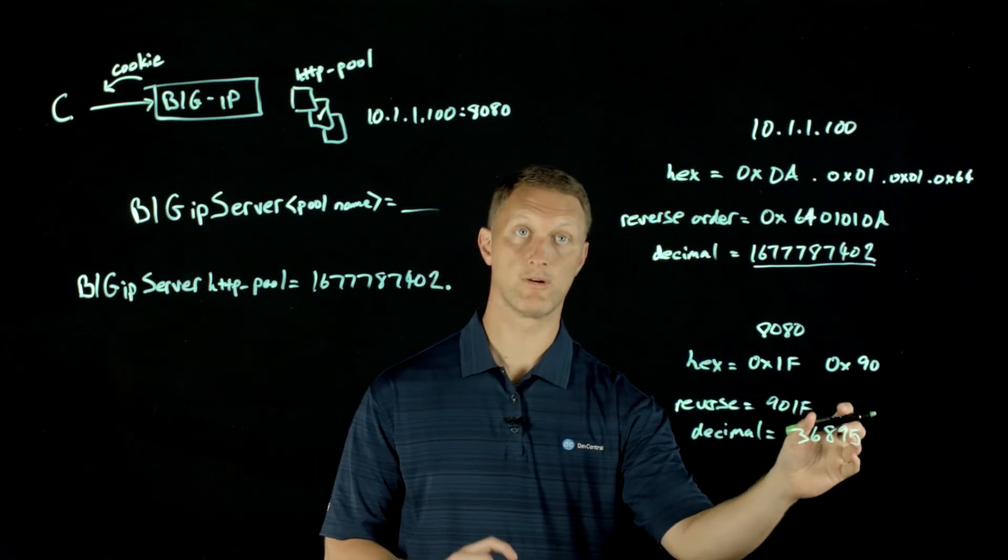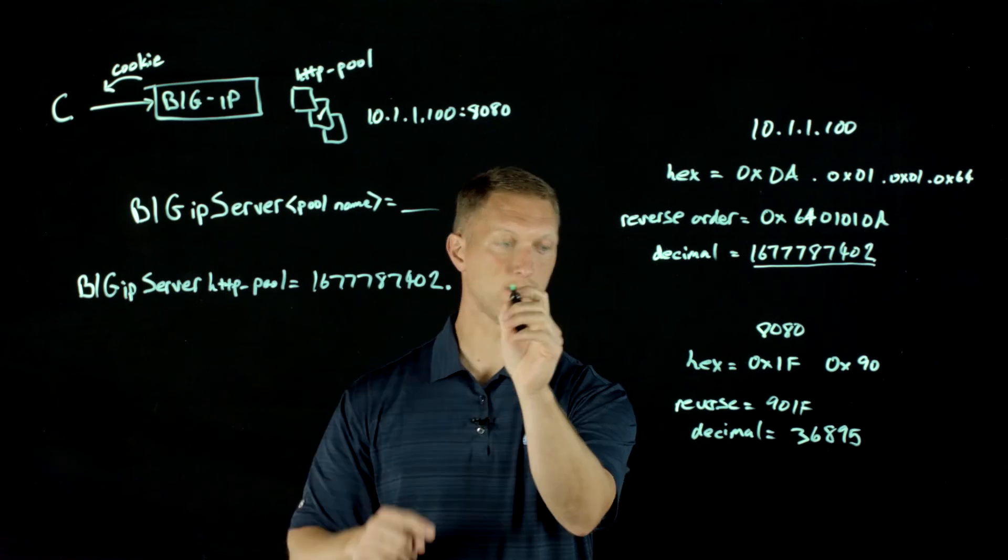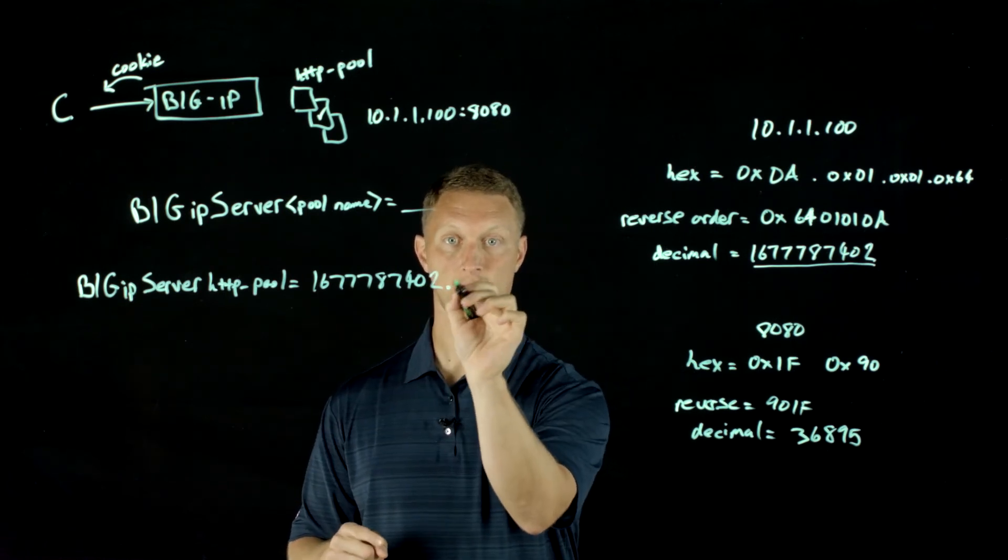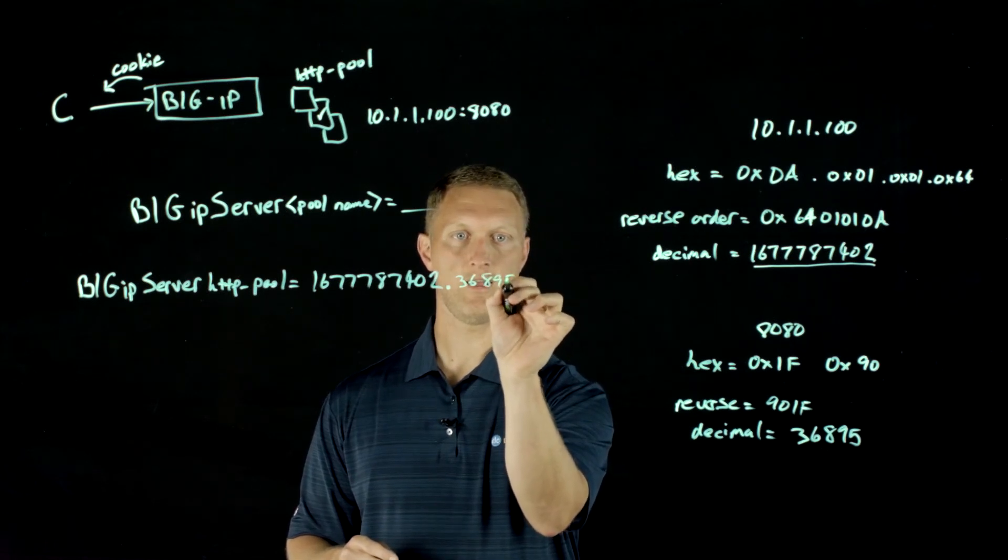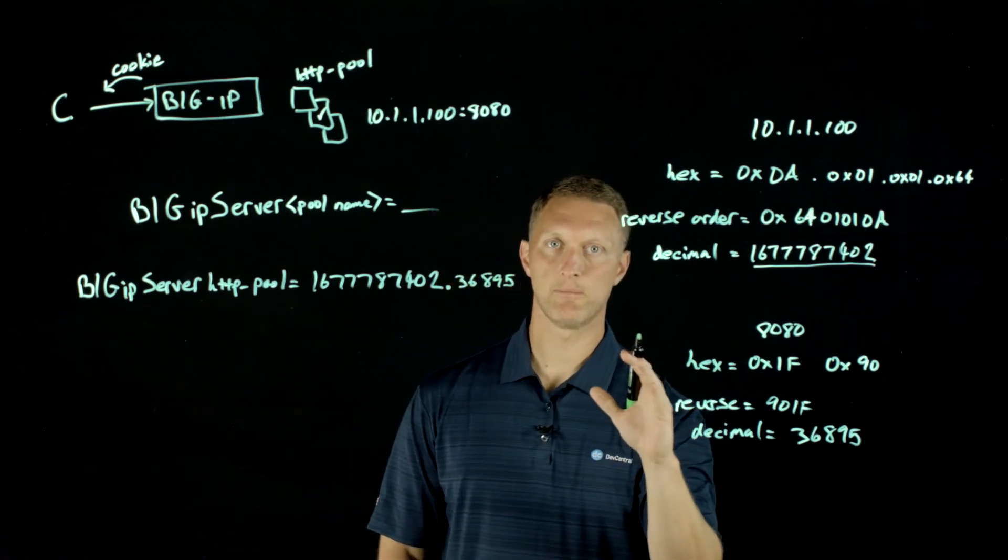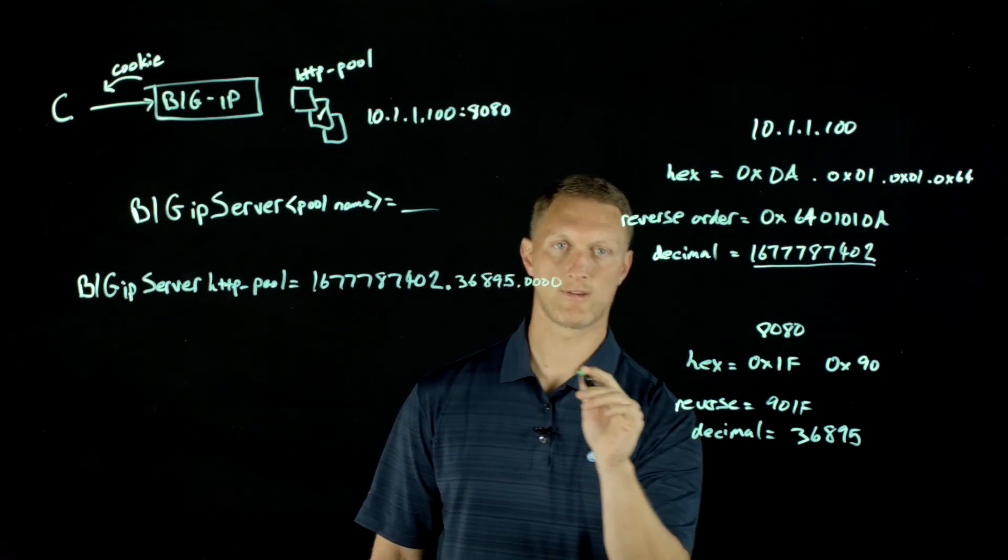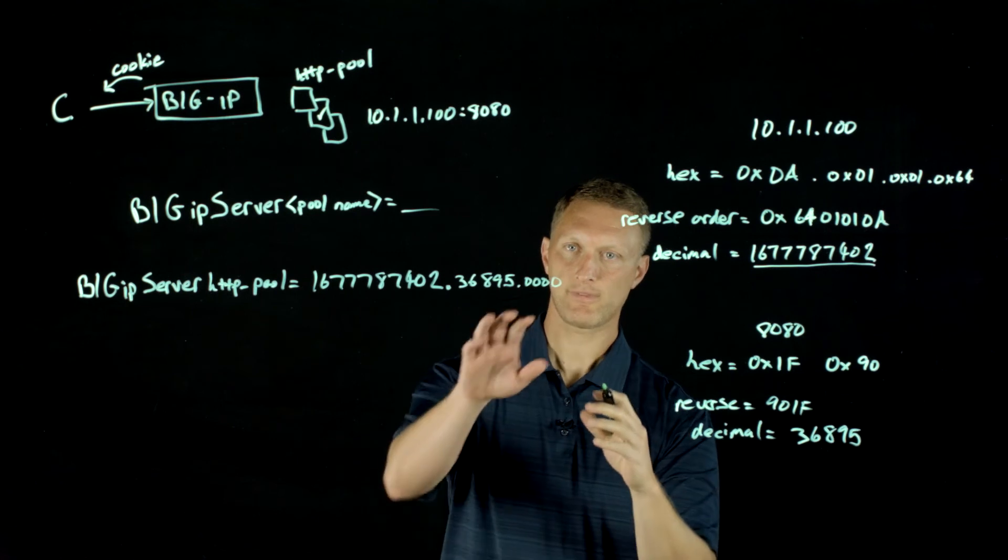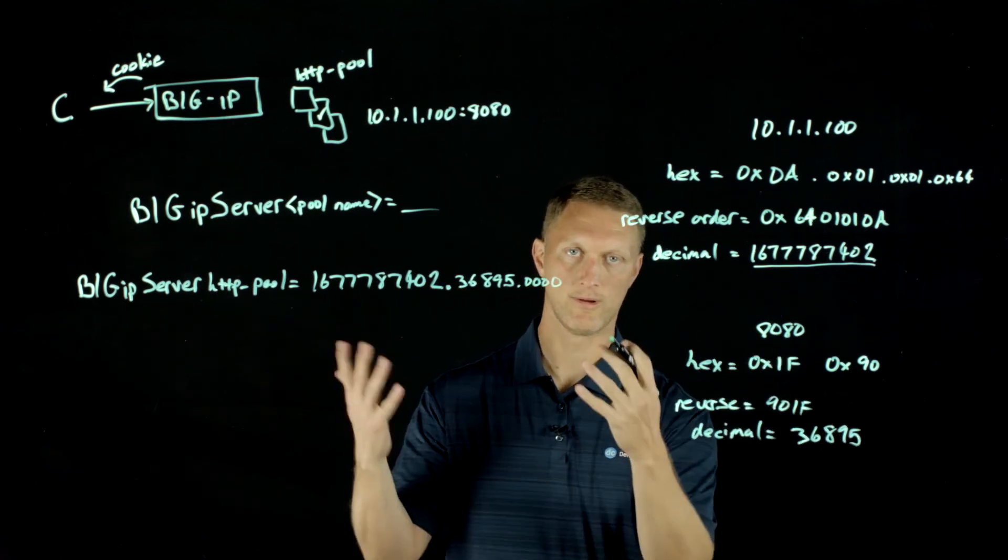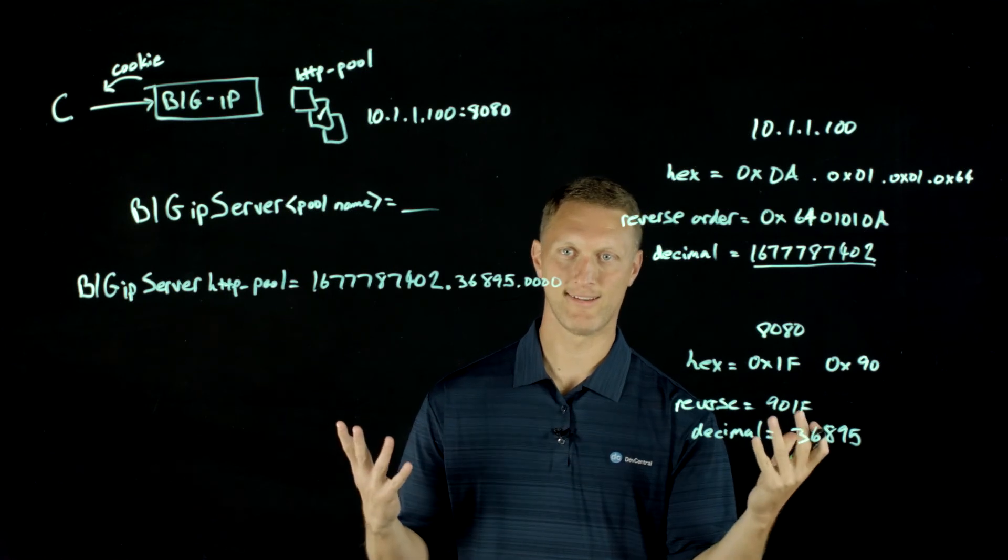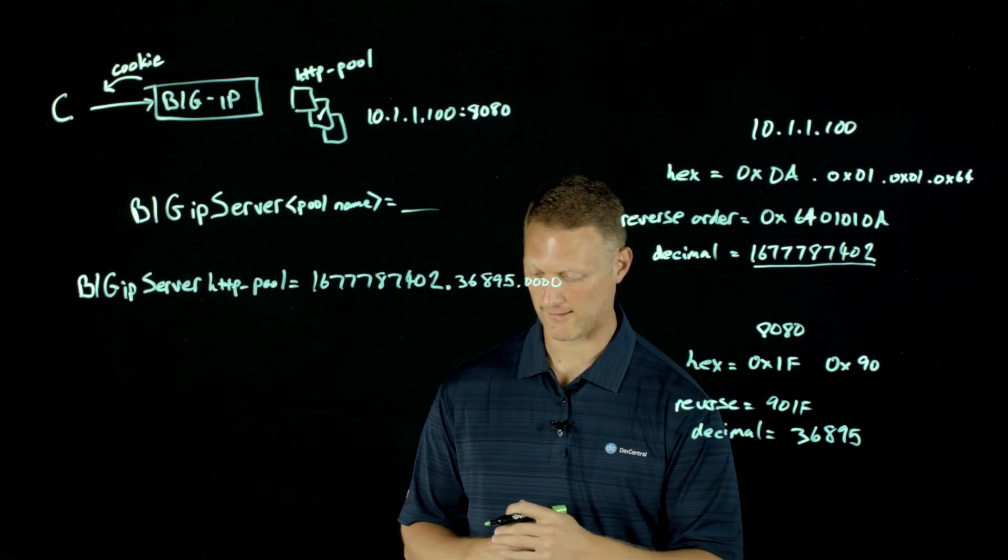So all that stuff from the IP address and then dot 36895. And then finally, what the big IP does is it also adds a period and then there's four zeros right here. So it's going to add four more zeros. Those don't mean anything right now. Those are reserved for future use, and the big IP can take that and use it in future iterations, as necessary.